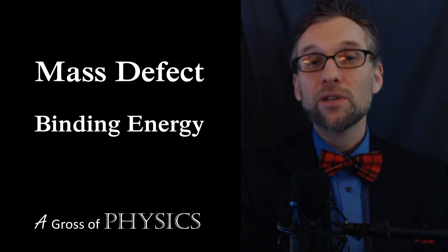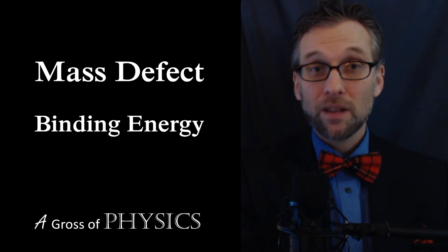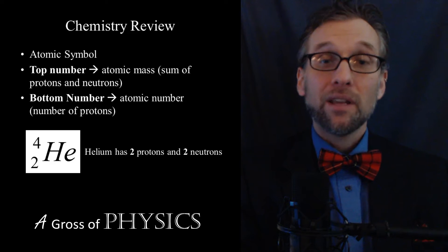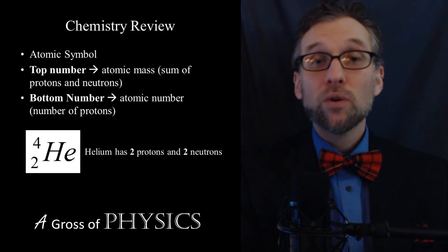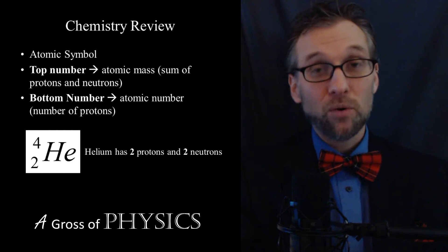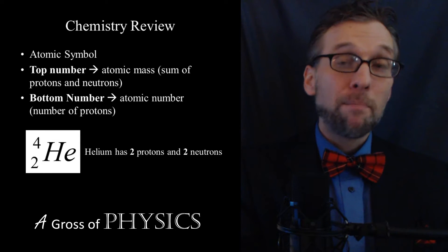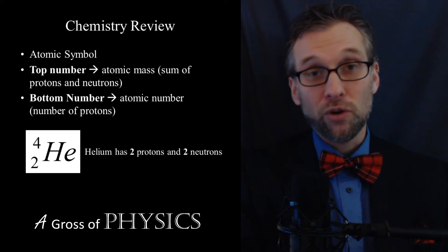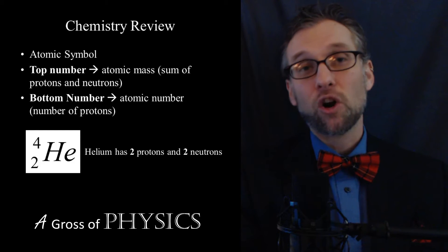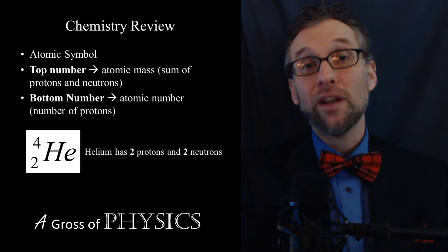First, we need to go back to chemistry. If you remember from chemistry, you had elemental symbols, and each symbol was listed in different ways. For example, helium on the periodic table was listed as helium, with 4 on the top and 2 on the bottom. The atomic symbol was He. The atomic number is the bottom value — in this case 2 — and the atomic mass was the top value, in this case 4. All of these were based on the carbon-12 scale.